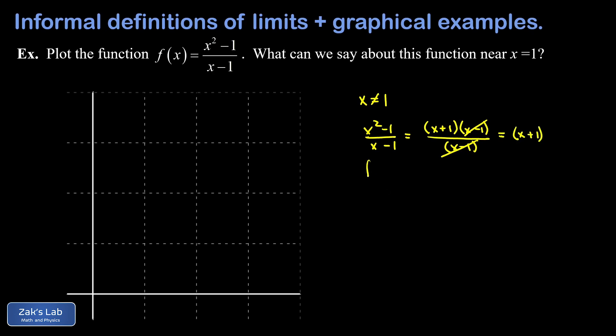So f(x) equals x plus 1, but we must keep in mind that x can't equal 1 because that causes a vanishing denominator in the original definition. We recognize f(x) = x+1 as a line with slope 1 and y-intercept 1. There's a picture of that line, but notice we had to poke a hole in it to deal with the fact that x can't equal 1.